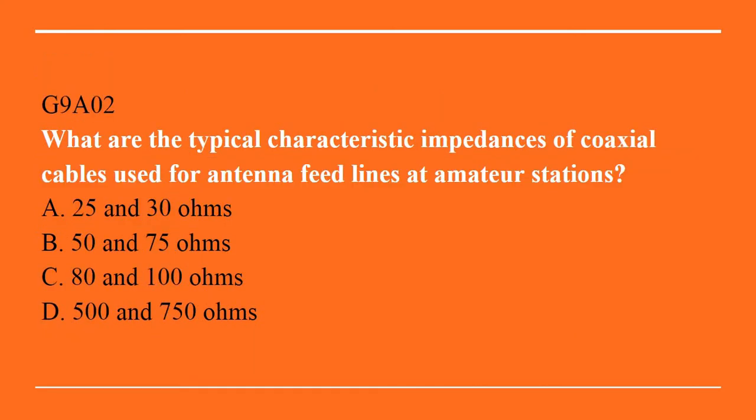G9A02: What are the typical characteristic impedances of coaxial cable used in antenna feedlines at amateur stations? A. 25 and 30 ohms. B. 50 and 75 ohms. C. 80 and 100 ohms. Or D. 500 and 750 ohms. The correct answer is B, 50 and 75 ohms.